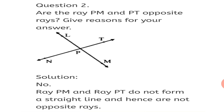Question 2: Are ray PM and ray PT opposite rays? Give reasons for your answer. The solution is no — ray PM and ray PT do not form a straight line, and hence are not opposite rays. For two rays to be opposite, they should have a common point and they should lie in a straight line. Since ray PM and ray PT are not in a straight line, they are not opposite rays.